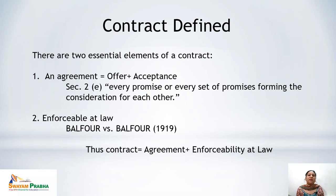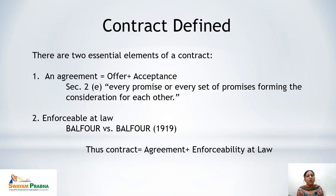A contract includes two elements: first, an agreement, and second, it should be enforceable at law. An agreement is a combination of offer and acceptance. Section 2(e) of the Indian Contract Act 1872 defines agreement as every promise or every set of promises forming the consideration for each other. An agreement requires more than one person, they must give acceptance on the same terms. Enforceability at law means it must give rise to a legal relationship — there must be some legal binding for the contract to be enforceable.